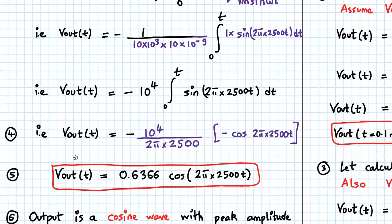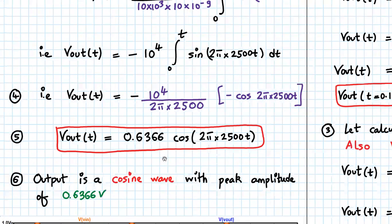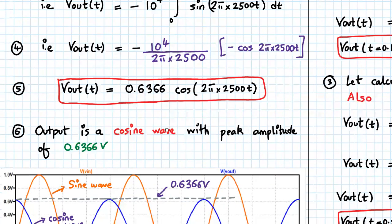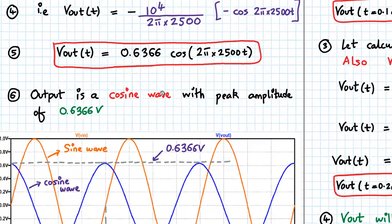So V out will be given by minus 10 to the 4 divided by 2 pi times 2500, giving 0.6366 cosine of 2 pi ft. That means the output is a cosine wave with a peak amplitude of 0.6366.